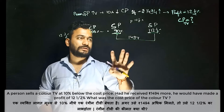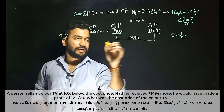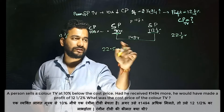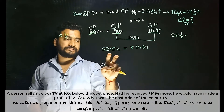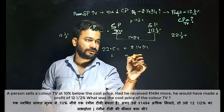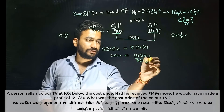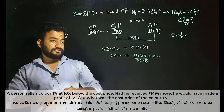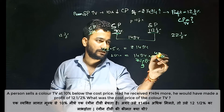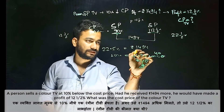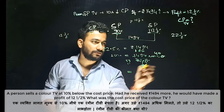Working through the calculation, the difference between 112.5% and 90% gives us 22.5%, and we get the value 25 from the working.